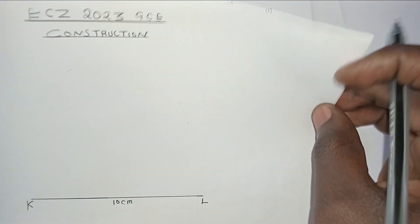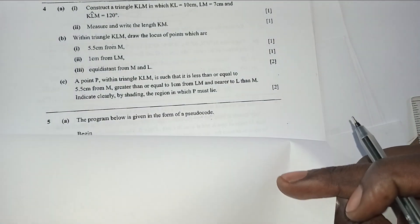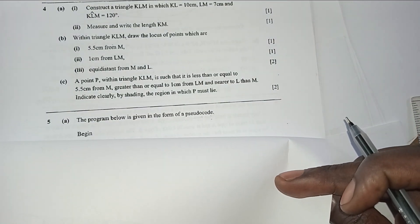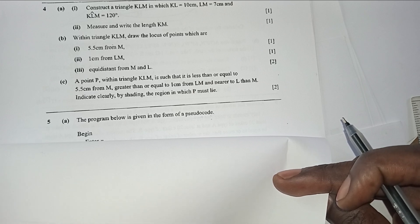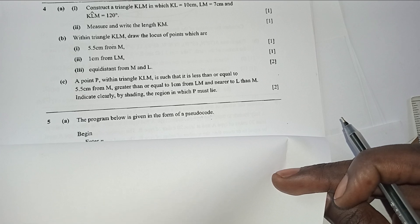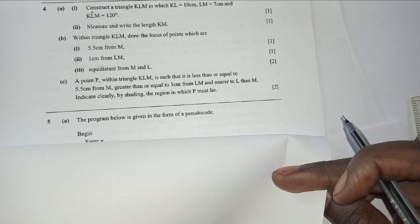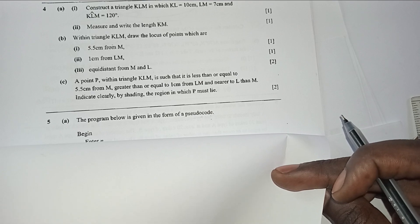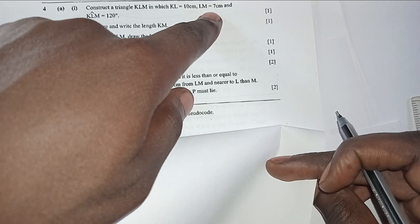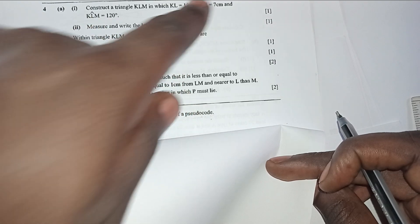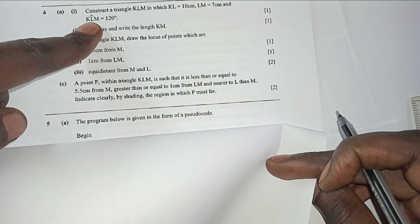The next part of the question asks you to also construct the distance LM which is equal to 7 centimeters and angle KLM which is equal to 120 degrees. Before constructing the distance LM, it is important to first do the angle of 120 degrees.